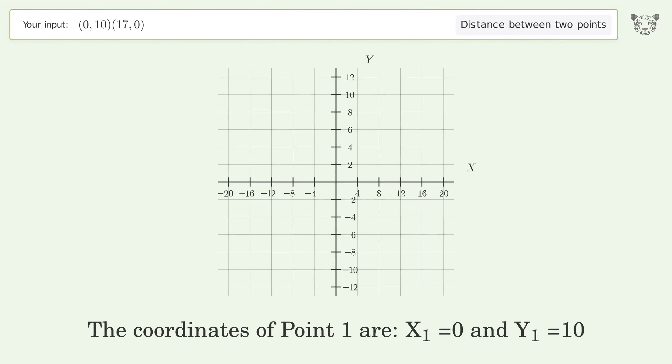The coordinates of Point 1 are x₁ = 0 and y₁ = 10. The coordinates of Point 2 are x₂ = 17 and y₂ = 0.